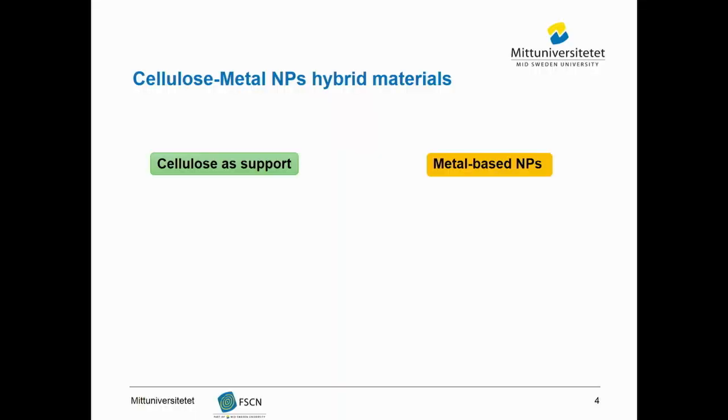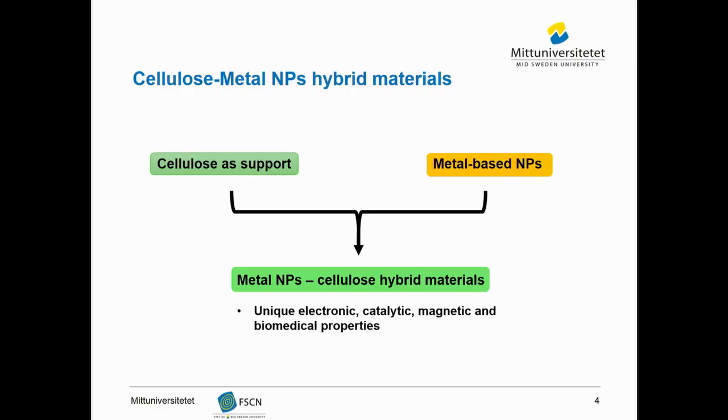Nanoparticles are hard to control. To make them usable, recyclable, and cost effective, they often need to be incorporated into a support material. In our study we used cellulose as a support material. By incorporating metal particles inside the cellulose matrix, metal nanoparticle–cellulose hybrid materials with unique electronic, catalytic, magnetic, and biomedical properties can be produced.